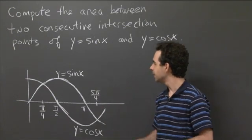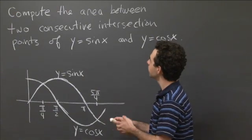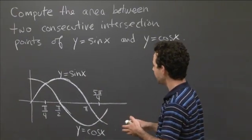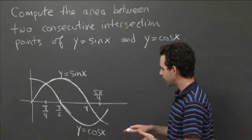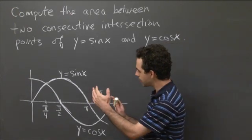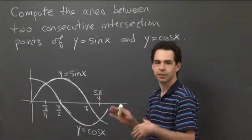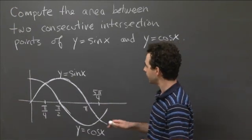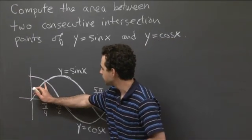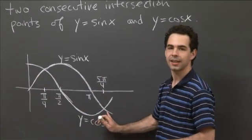I have here a nice little region that I like. It's the region between y equals sine x and y equals cosine x. Those two curves cross each other over and over again. They wrap around each other. So I'm just interested in the region between two consecutive points where they cross.